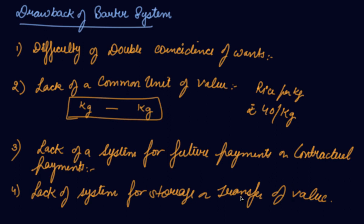in place of goods according to the time, otherwise the goods will be spoiled. So there was lack of system for storage or transfer of value. This was the barter system and the drawbacks of barter system, due to which money evolved.